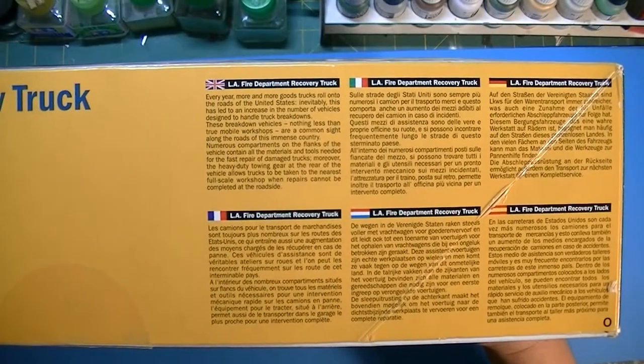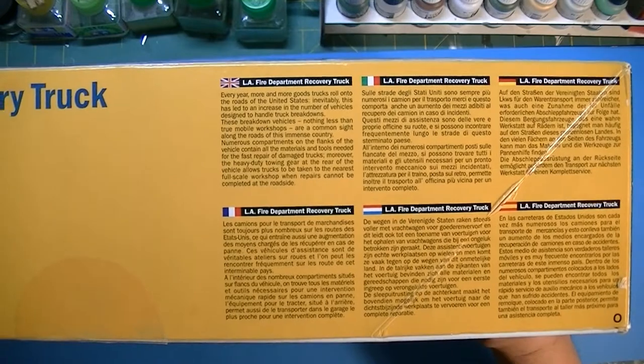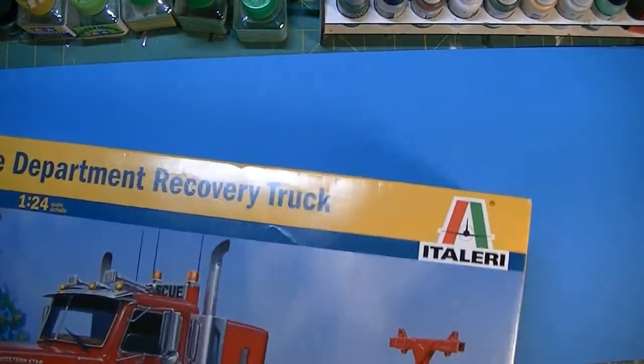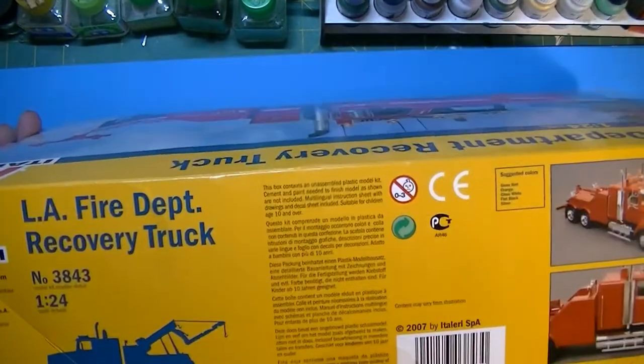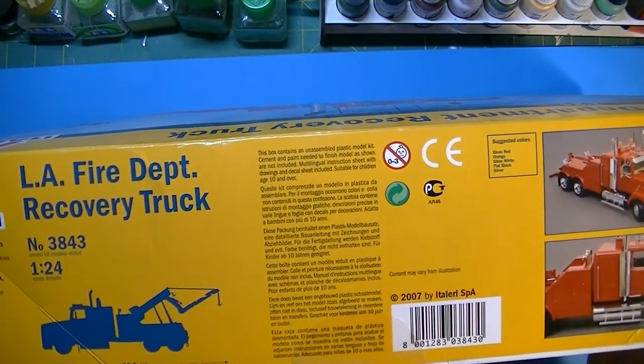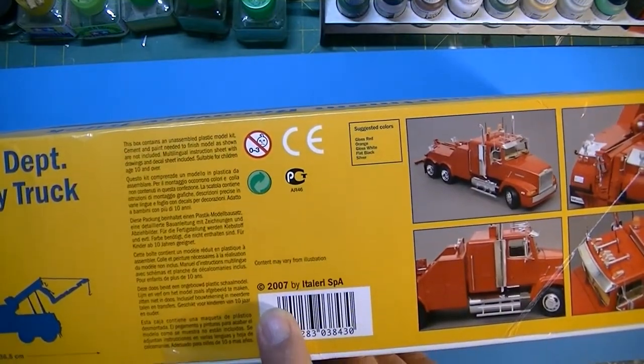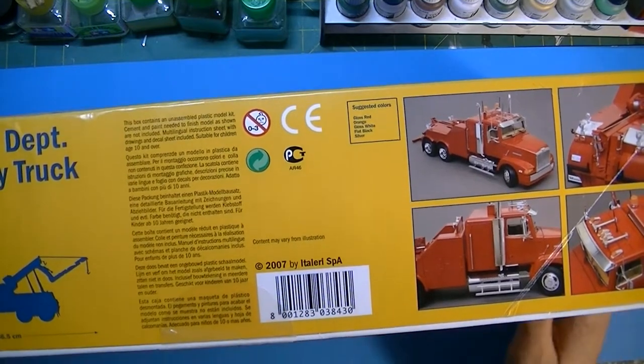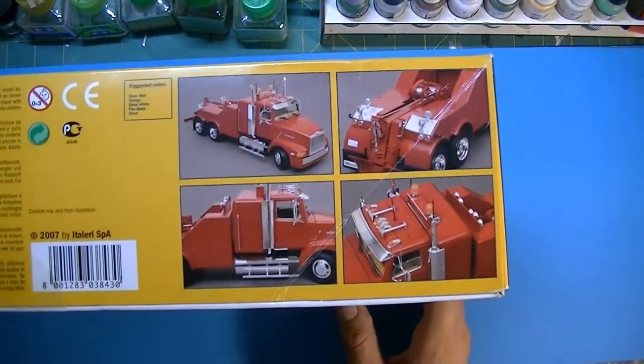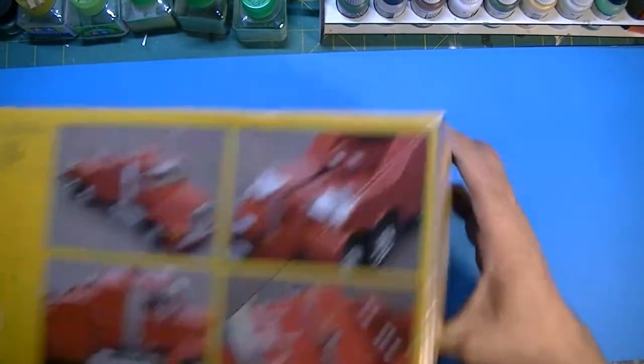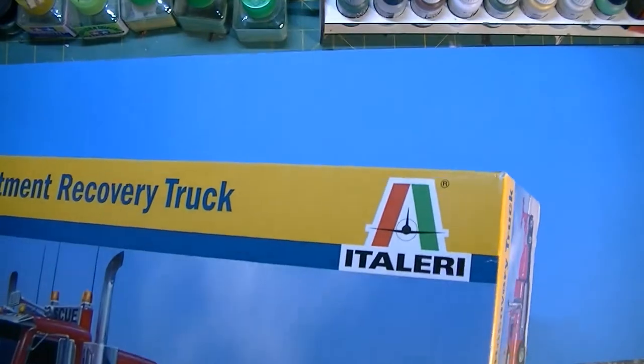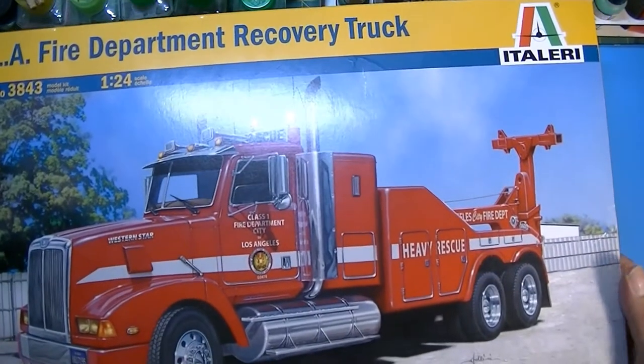If you want to zoom in there, pause it and read the history of it. Now flip her over - same thing, 36.5 centimeters long. Box says 2017 by Italeri with some pictures on how it should look when she is done.